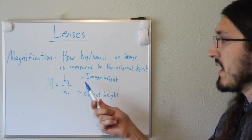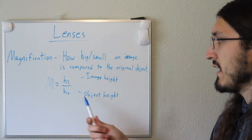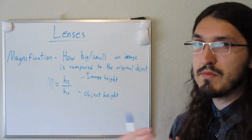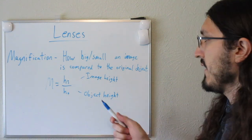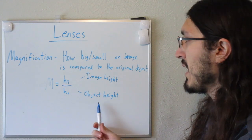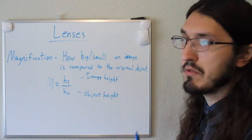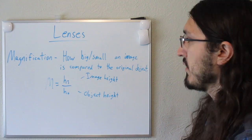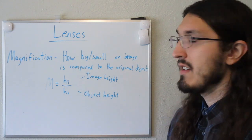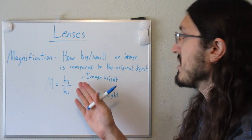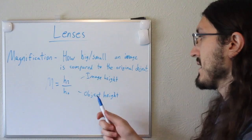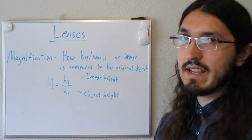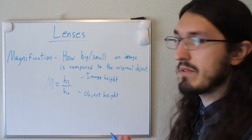If the image height is greater than the object height then the magnification will be greater than one, which is like a zoomed-in image. If the image height equals the object height then magnification equals one, meaning no magnification is occurring. If the magnification is less than one, the object height is bigger than the image height, which means you're looking at a zoomed-out image.